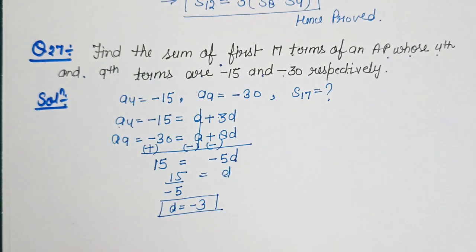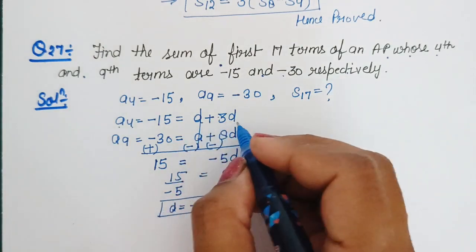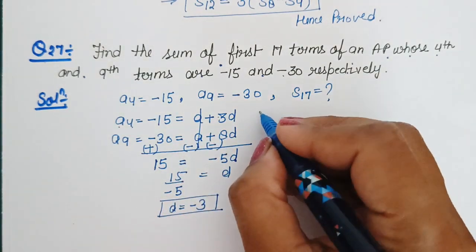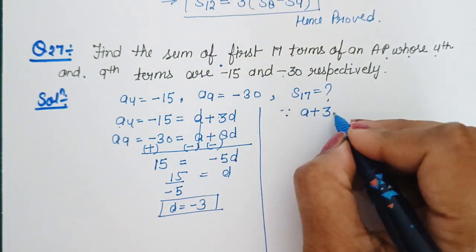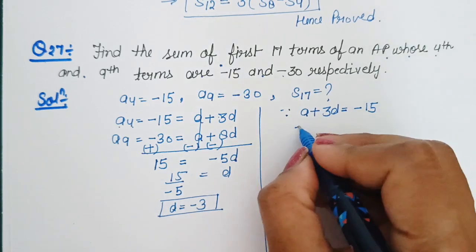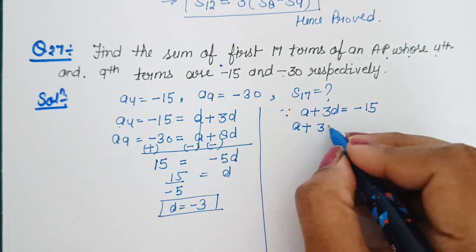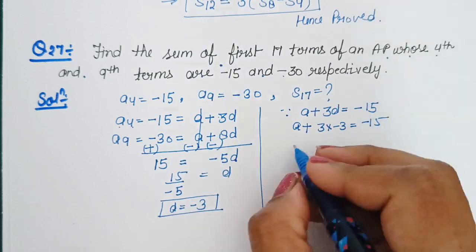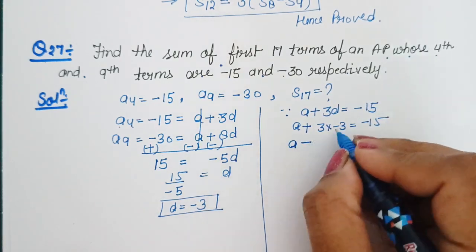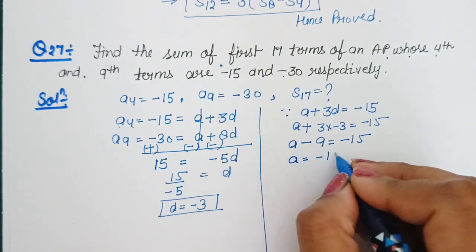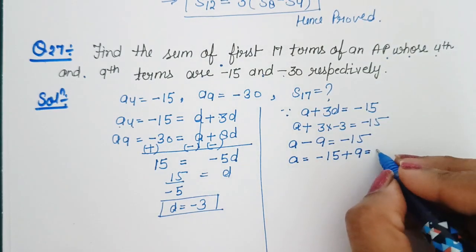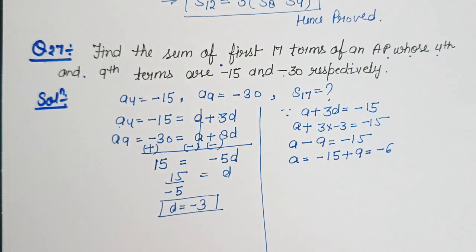Toh D ki value humein mili hai minus 3. Ab is value ko hum equation number 1 mein put kar dete hain, toh yahan se humein A ki value mil jayegi. A plus 3D is equal to minus 15, toh A plus 3 into minus 3 is equal to minus 15. Toh A minus 9 is equal to minus 15, so A ki value humein mili minus 15 plus 9, this is equal to minus 6.